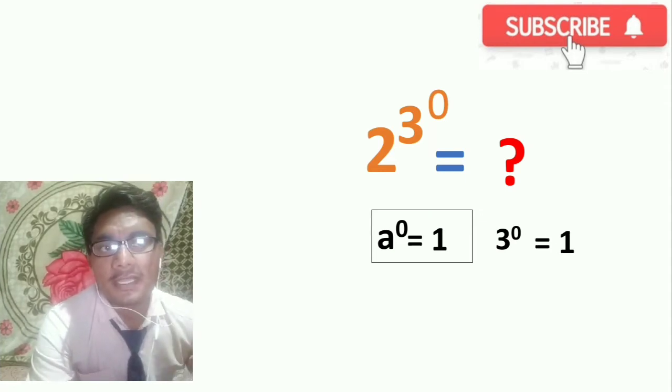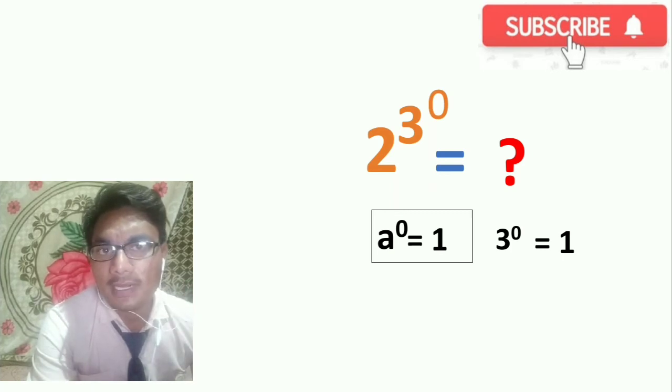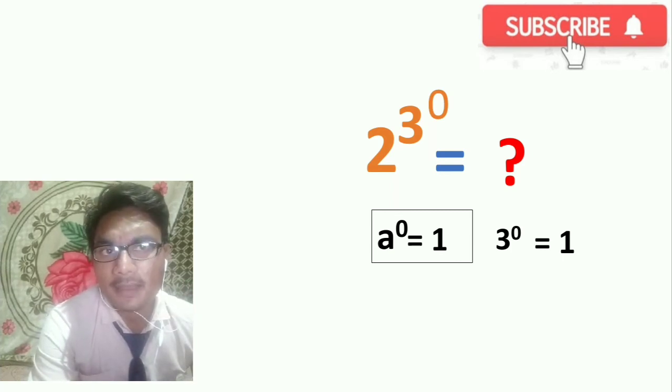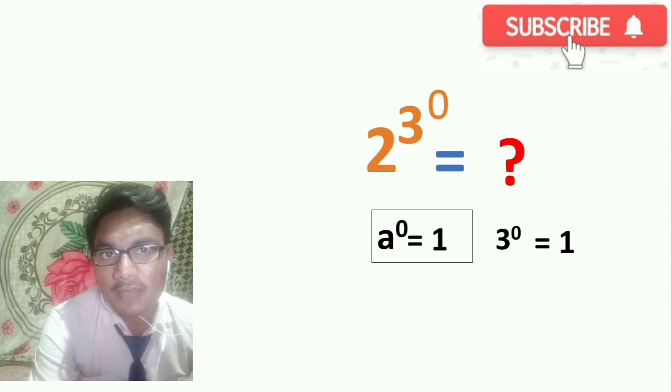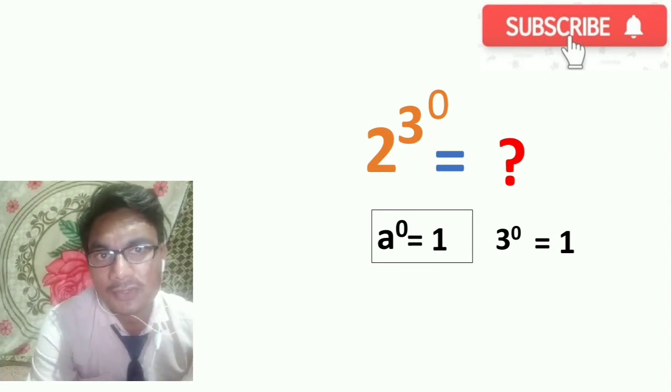Now if you see 3 raised to 0, we get 1. It means that we get 2 raised to 1. We replace 3 raised to 0 by 1 because 3 raised to 0 equals 1. So we have 2 raised to 1.